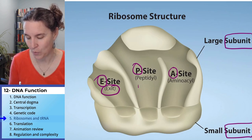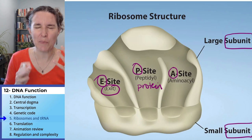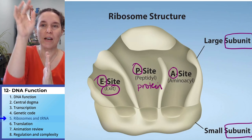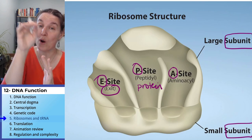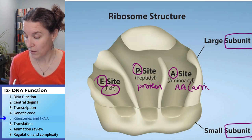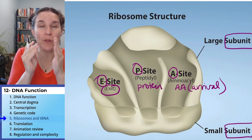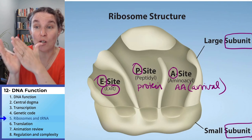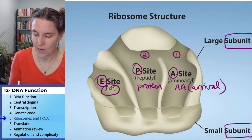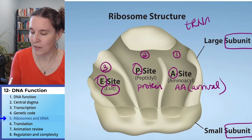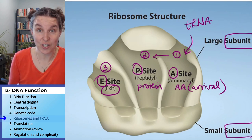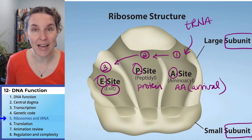The P site I think of as the protein site — this is the place where I'm building my protein. If everything pauses, I should have a string of amino acids growing at the P site. And the A site I think of as the amino acid site, or the arrival site — this is where the next amino acid arrives. So a tRNA molecule arrives at the A site, moves to the P site and gets attached to the growing peptide, and then leaves at the E site.